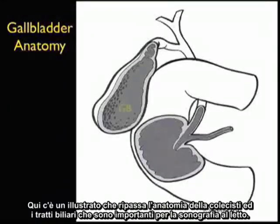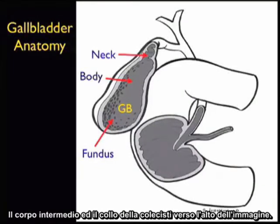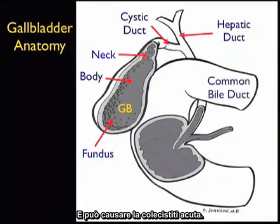Here's an illustration reviewing the anatomy of the gallbladder and biliary tracts important to bedside sonography. We see the gallbladder shaped as a pear-like structure, with its parts: the upper fundus, the intermediate body, and the neck of the gallbladder towards the top of the image. Recall that impacted stones at the neck of the gallbladder often cause symptomatic biliary colic and can lead to acute cholecystitis.